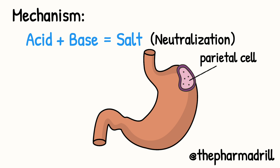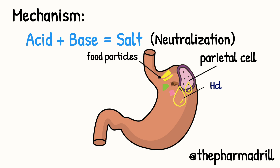In the stomach, the parietal cells secrete HCl, which is known as digestive juice. In normal conditions, when food enters into the stomach, the parietal cells secrete HCl which helps to digest the food. But due to overeating, there is excess secretion of HCl into the stomach, leading to acidity.